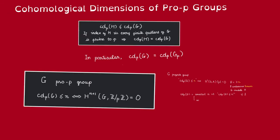Recall previously, when discussing the p-cohomological dimension of subgroups, we said that if the index of H in every finite quotient of G is prime to p, then the p-cohomological dimension of H is actually going to be equal to the p-cohomological dimension of G. A particular case of this is when H is the pro-p Sylow subgroup of G. So then we see that the computation of these p-cohomological dimensions could be reduced to computation of that of the pro-p groups.